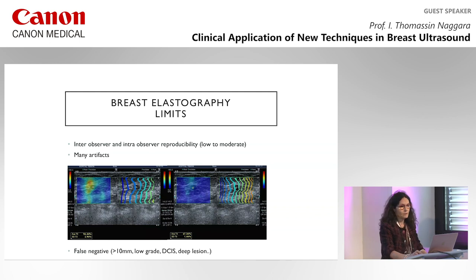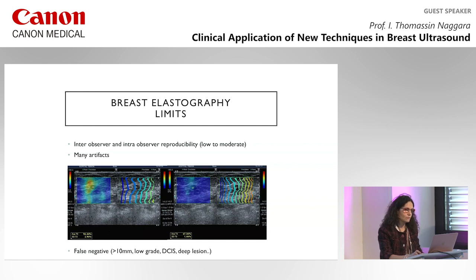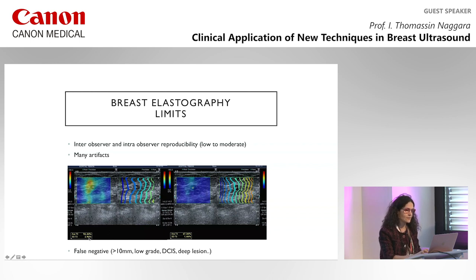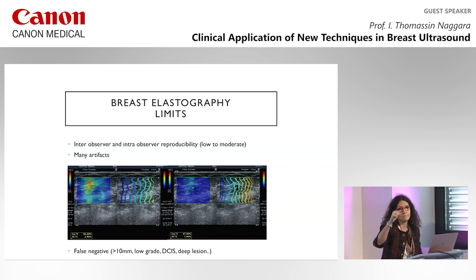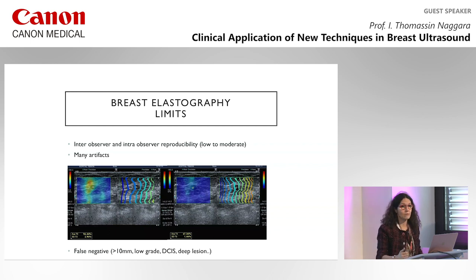The main limits of breast elastography — even in shear wave — are the inter- and intra-observer reproducibility, which is low to moderate. Here I took the same image twice with different compression levels; on shear wave you can completely modify the coefficient: 94 in the same lesion, then 47. That's why it's very important to use a ratio, because if you use a ratio even with strong compression it allows you to be more reproducible.